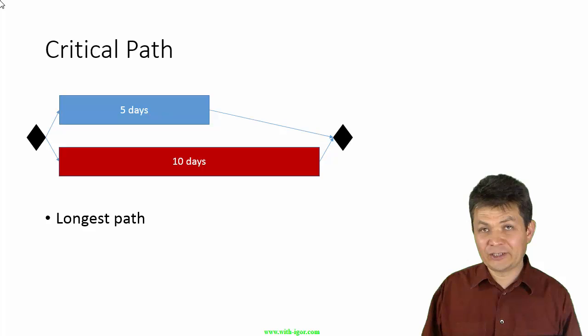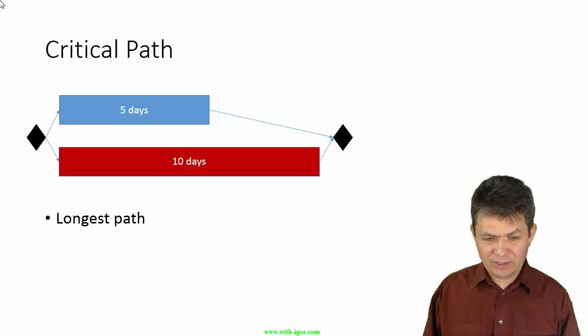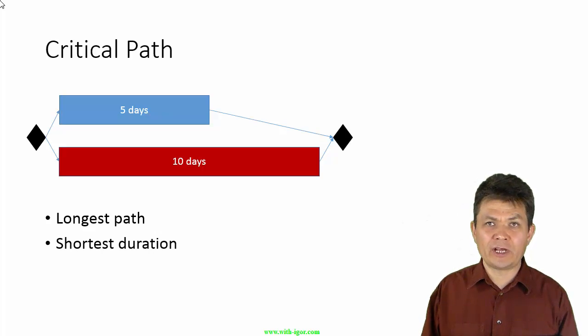Now, why is it important? Well, it is important because the longest path actually determines the shortest time that it will take us to complete the project. It is the shortest duration of the project. If you look at our project here, 10 days as scheduled right now is the shortest duration.